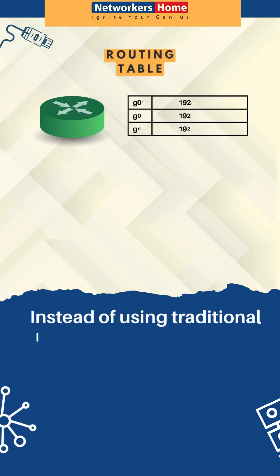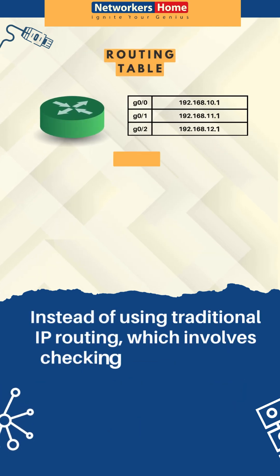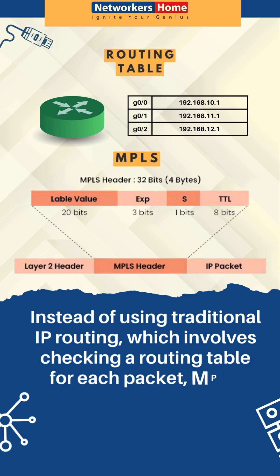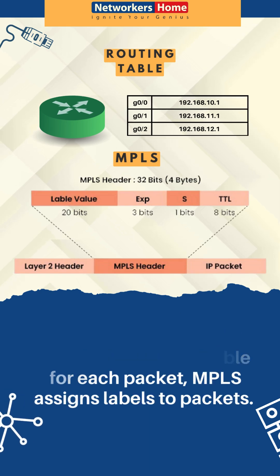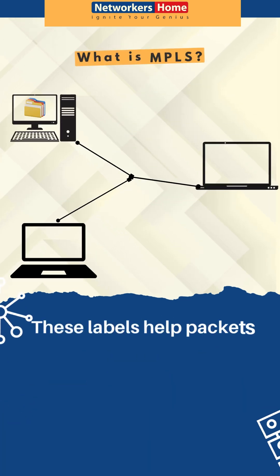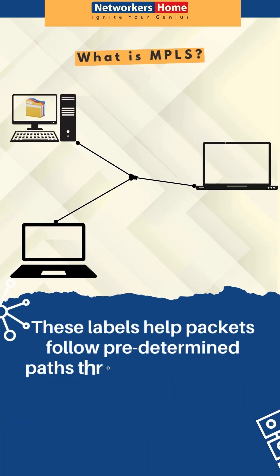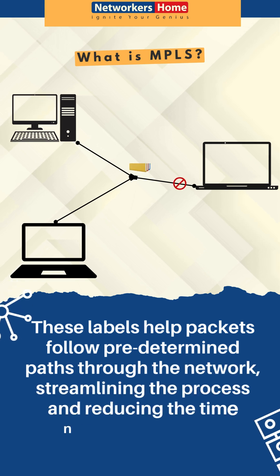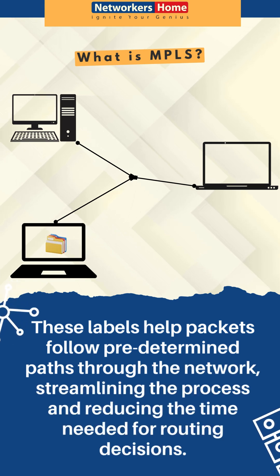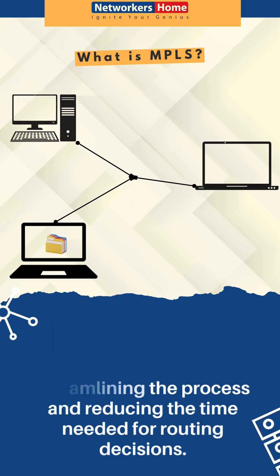Instead of using traditional IP routing, which involves checking a routing table for each packet, MPLS assigns a label to each packet. This label helps the packet follow a predetermined path through the network, streamlining the process and reducing the time needed for routing decisions.